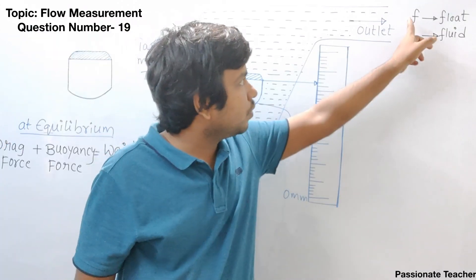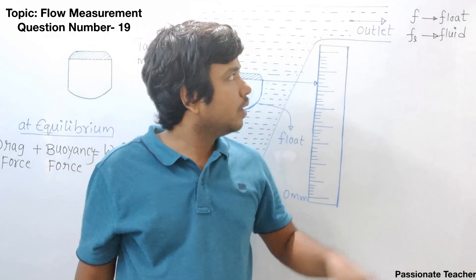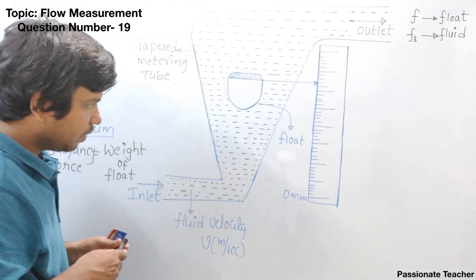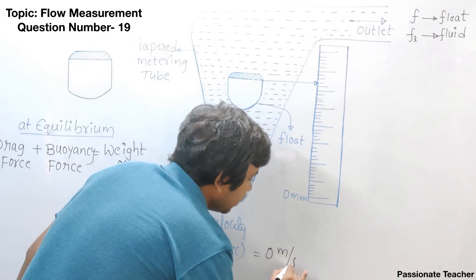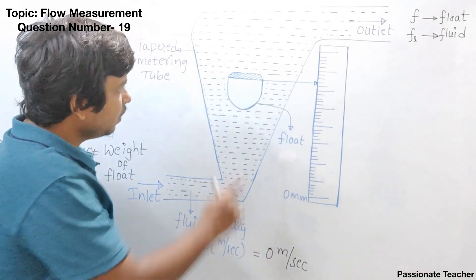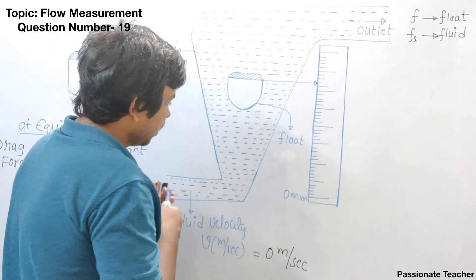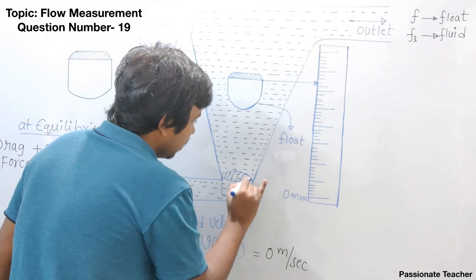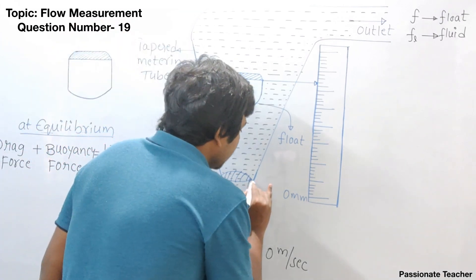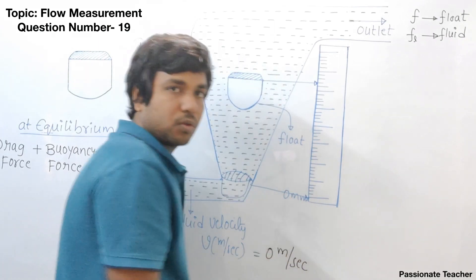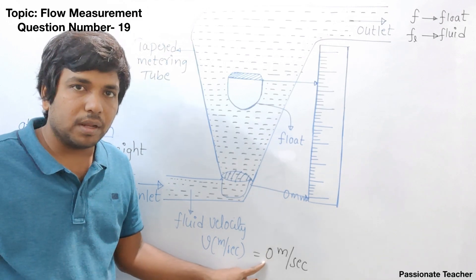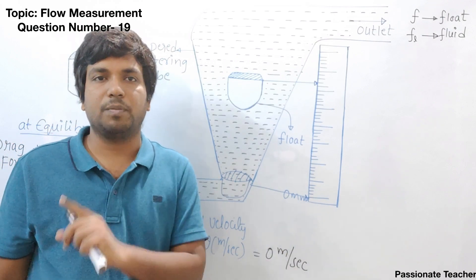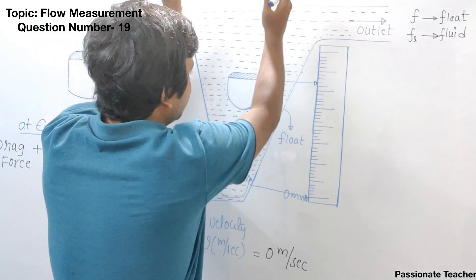Throughout this explanation, if I use 'F' alone it means float; 'FL' means fluid. If the fluid average velocity is equal to zero meters per second, the fluid is static. When the fluid is static, the float will rest at the bottom, indicating exactly zero on the scale. This is why the rotometer is called an indicating type instrument. Also, the rotometer is always placed vertically so that the gravity component is present.